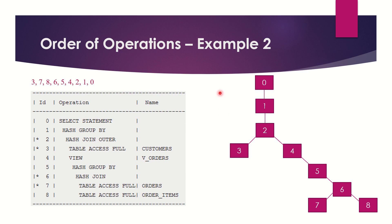Before we start, if you have not subscribed to this channel you can click on the subscribe button below and also click on the bell notification to receive all notifications via email. Let's get started with example two of reading and interpreting an execution plan using the parent-child relationship. I have not posted the query here — this is just an execution plan — and we will create a parent-child relationship tree out of this and then read the order of operation.